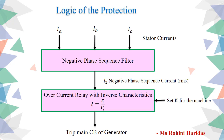The protection against unbalanced loading is provided with the help of an inverse time over-current relay, which is fed with the negative sequence component of the stator current. To extract the negative sequence component of the stator current, we use a negative phase sequence filter. Under normal operating conditions, there is no negative phase sequence component in the stator current, so the filter produces no output and the relay is inoperative. When an unbalanced load occurs, the negative phase sequence filter produces an output proportional to the negative phase sequence component, which is given to the relay coil, causing the relay to operate and open the circuit breaker to isolate the generator.